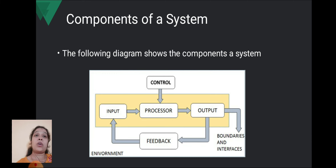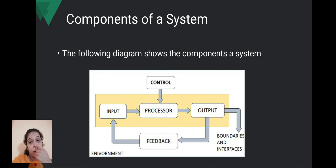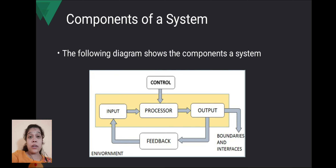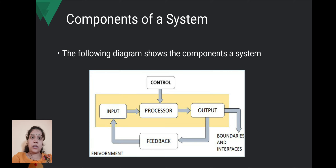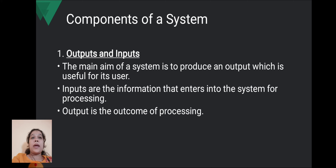Next is components of the system. There are five components: input, output, processor, feedback and control, and boundaries and interfaces — and all of this comes under the environment. Input is what you provide; the processor processes it; a control unit manages the processor; after processing, output is generated; and then feedback is provided based on whether the output was proper or not.